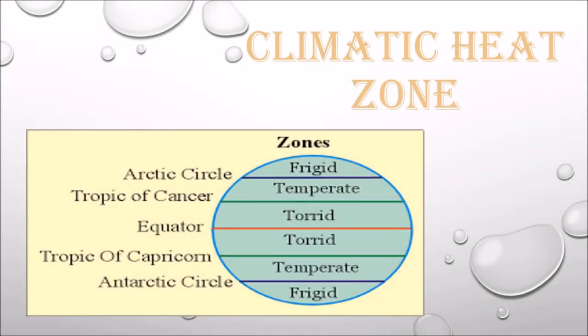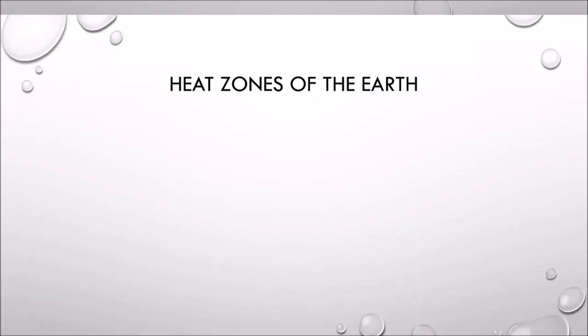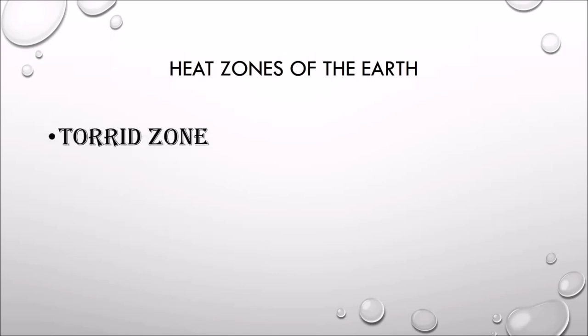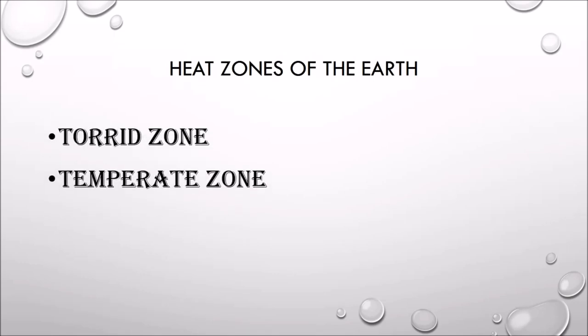Hello students, today I will provide you some information about climatic heat zones. There are three heat zones of the earth: torrid zone, temperate zone, and frigid zone.